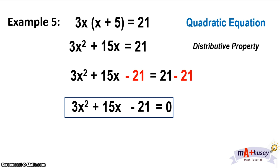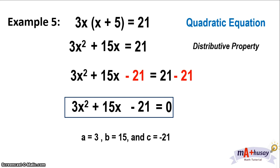This is now written in standard form, where A is equal to 3, B is equal to 15, and C is equal to negative 21.